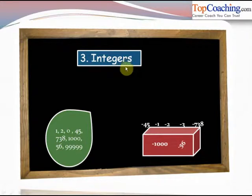The next is integers. Now what are integers? Again we consider this bag. It has the numbers 1, 2, 0, 45, 7, 38, 10, 56, 99,999 and so on. So this bag consists of all the whole numbers, and whole numbers are denoted by W.